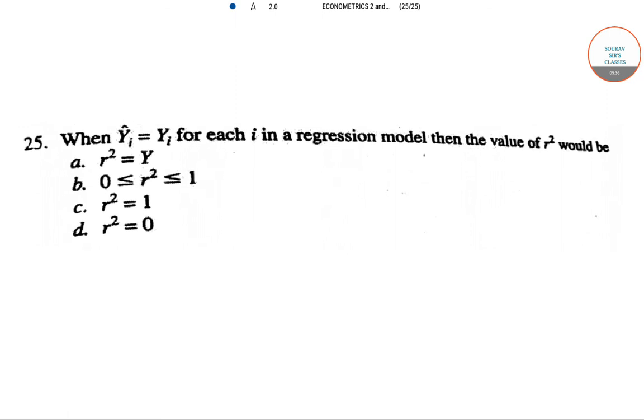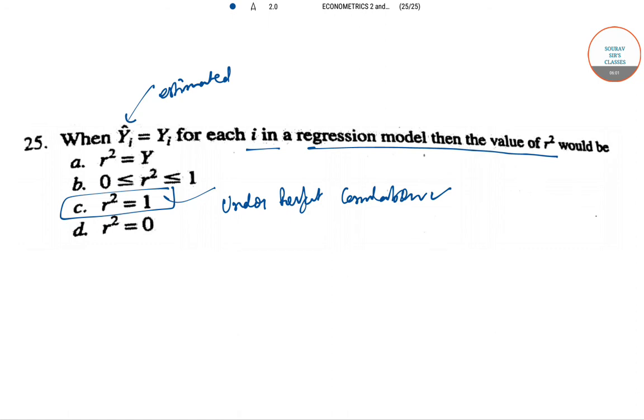The last question for this part: when Ŷᵢ, the estimated value, equals the original value for each i in a regression model, then R² will obviously equal 1, the maximum value. This is only possible under perfect correlation.